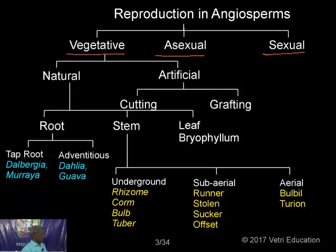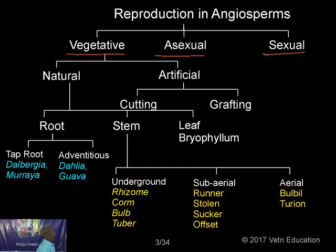In today's class we are going to discuss only about vegetative propagation. Vegetative propagation is once again divided into natural and artificial. Many plants are able to propagate by natural means — nature has given them the capacity of propagating very fast. By utilizing this principle, man has also developed artificial methods of propagation.